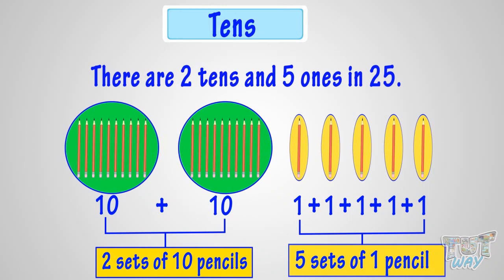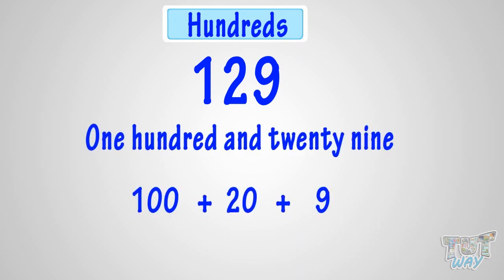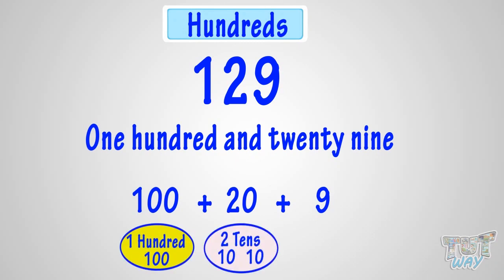Let's take another example. Now, which number is this? Yeah! This is one hundred and twenty-nine. Here we have one hundred, twenty or two tens, and nine or nine ones are there in this number.